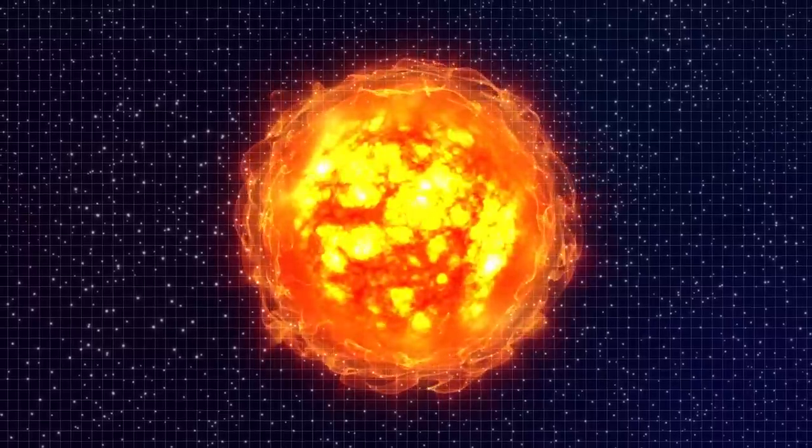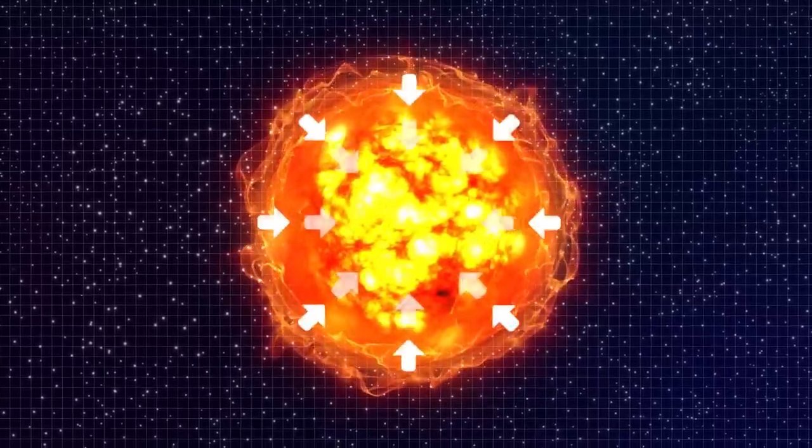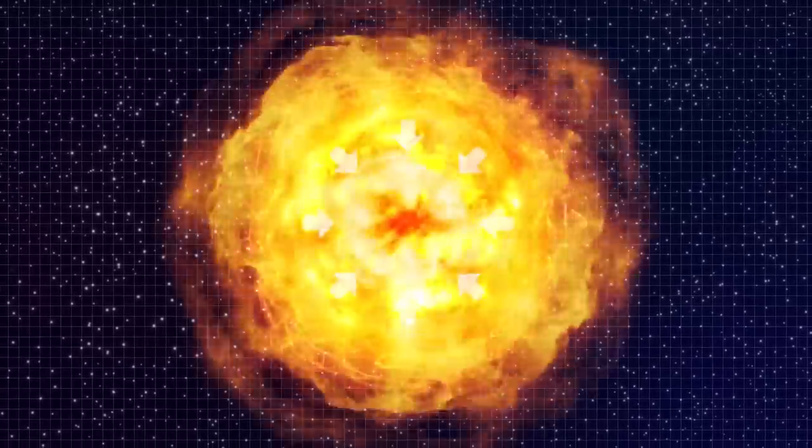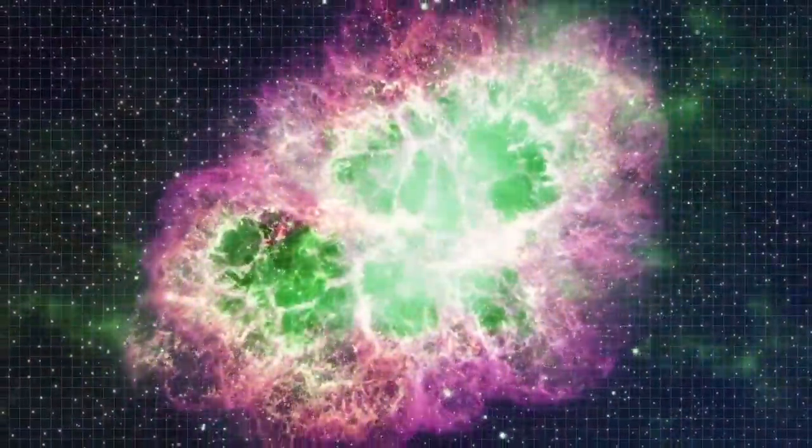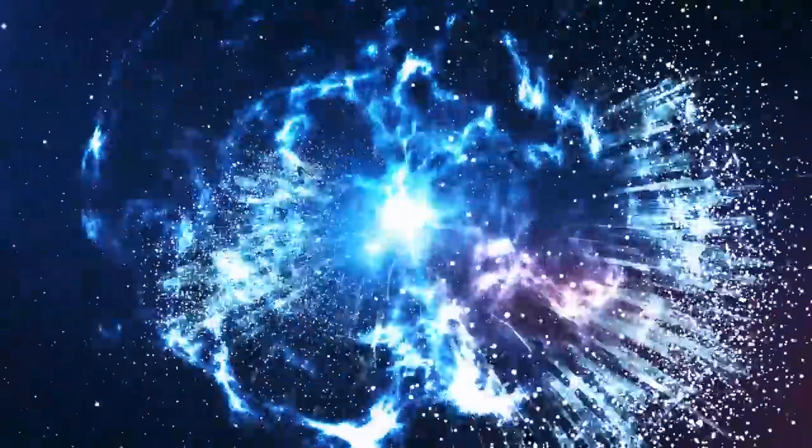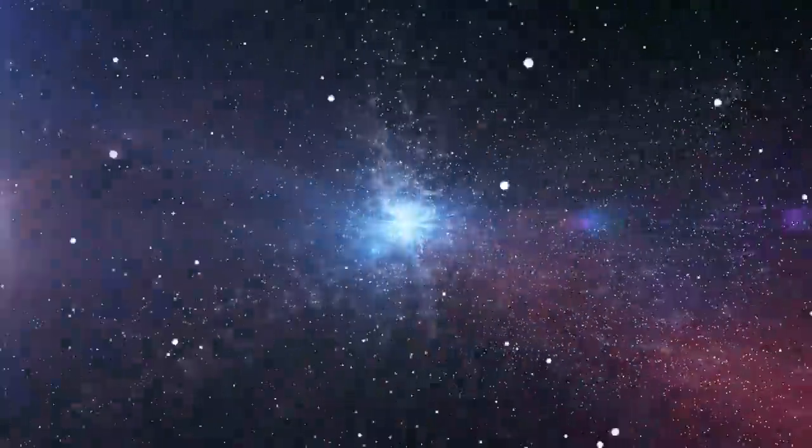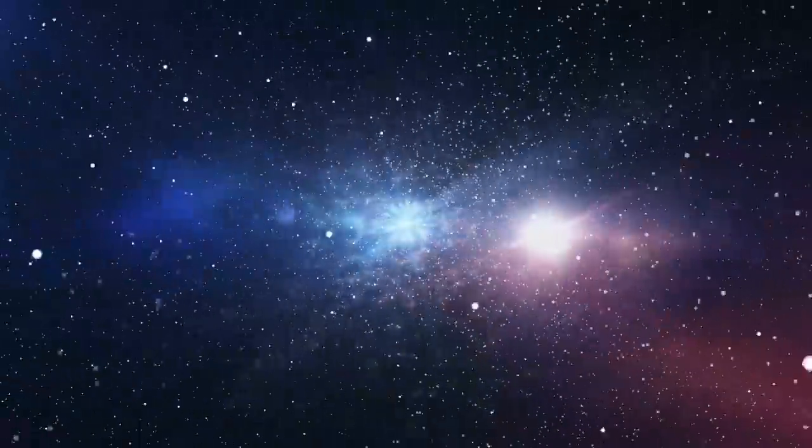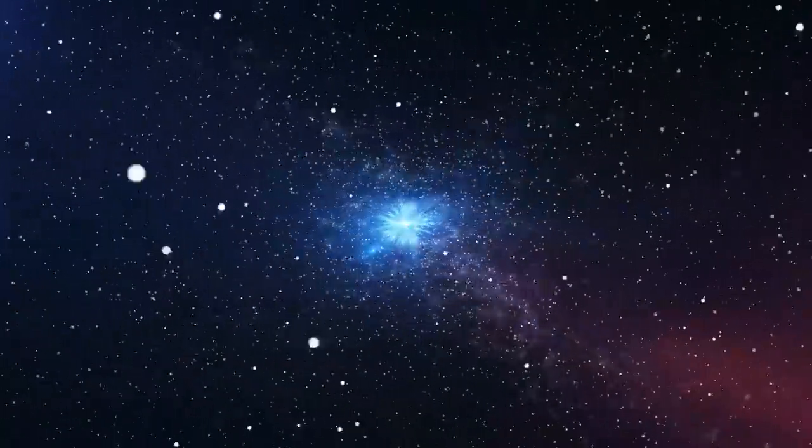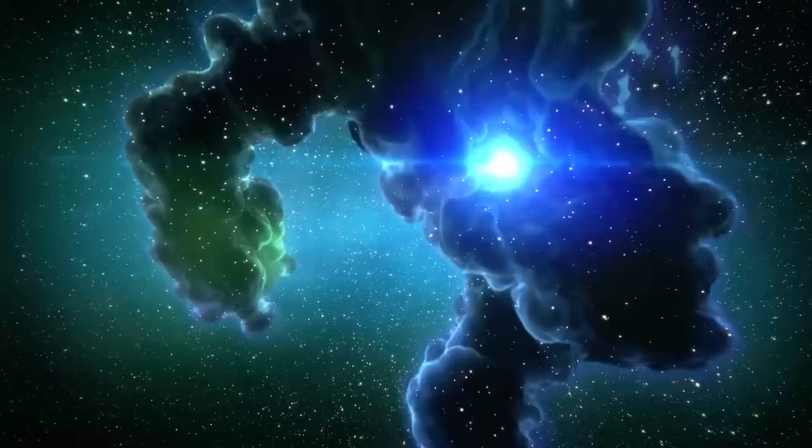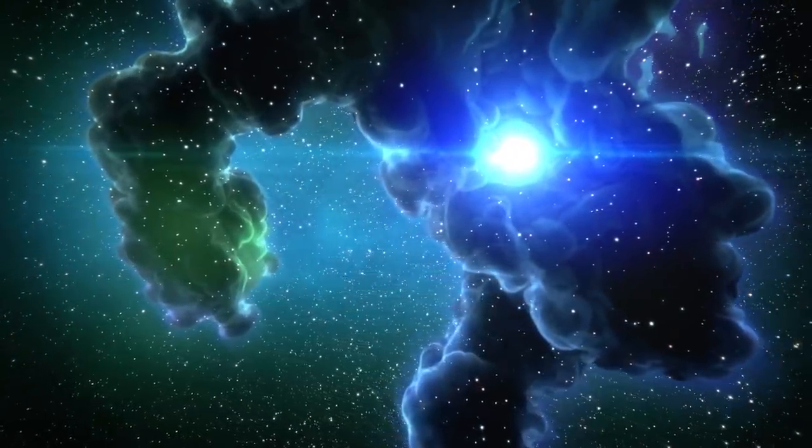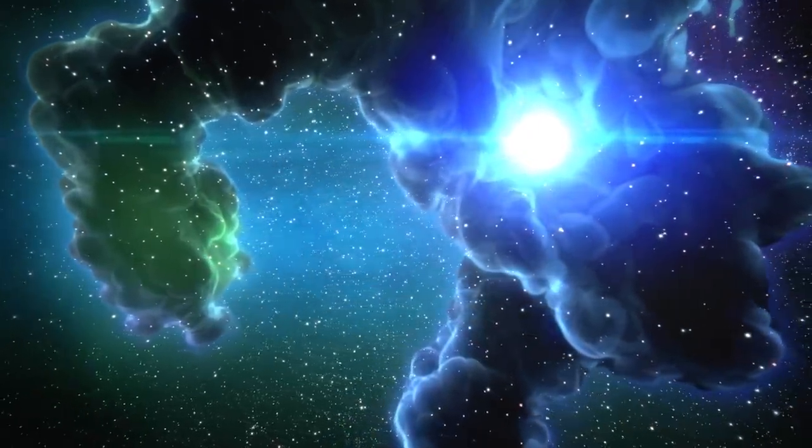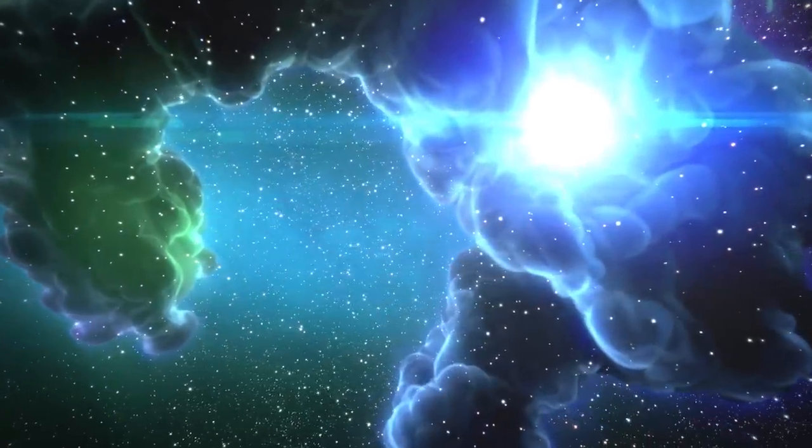When a star burns all its nuclear fuel, gravity starts winning, and this million-year-long battle eventually ends up with a catastrophic collapse. Enormous shock waves are generated at such a quick pace that the outer part of the star explodes, generating a bright and powerful explosion. A typical supernova may shine with the brightness of 10 billion suns and generate 10 to the 44 joules of energy.